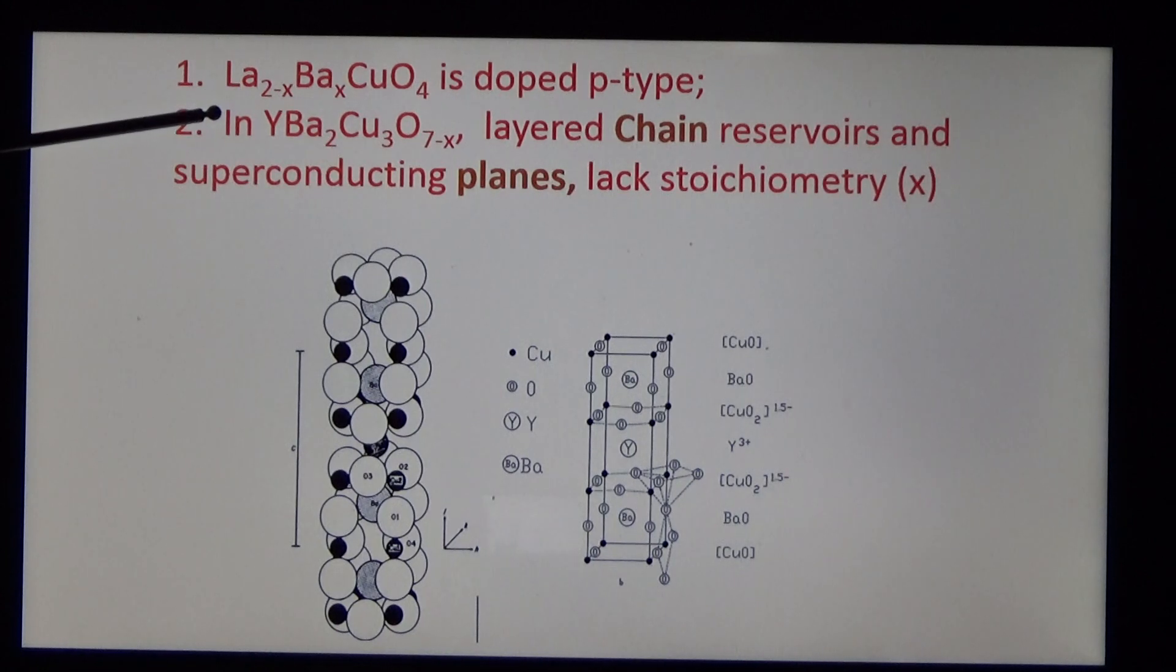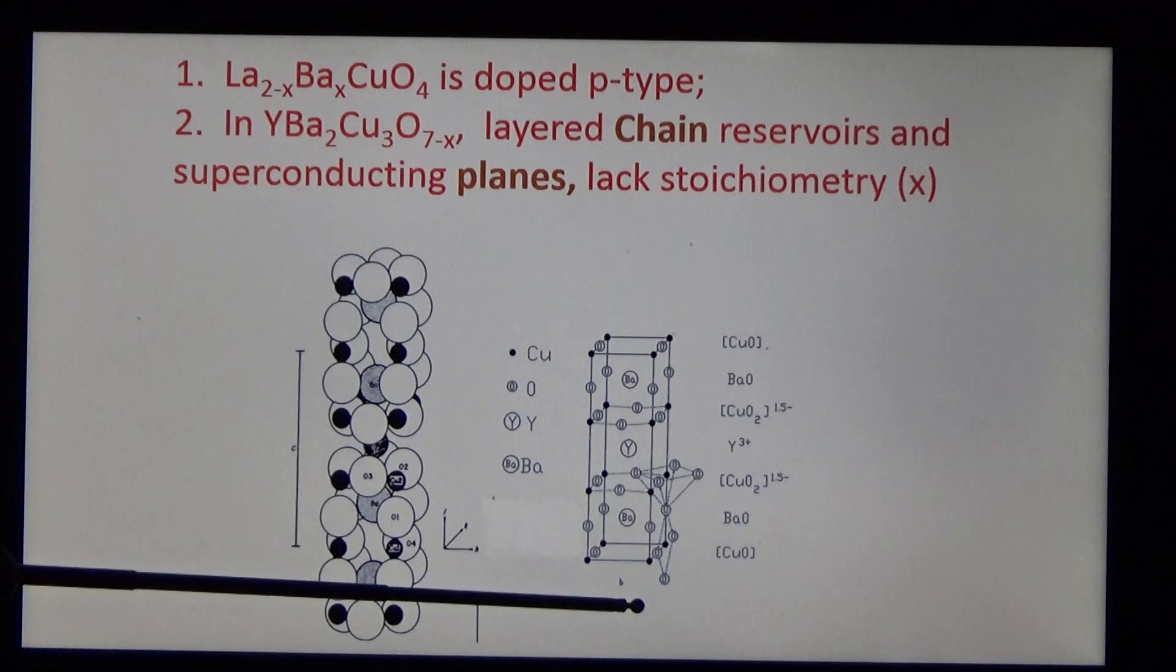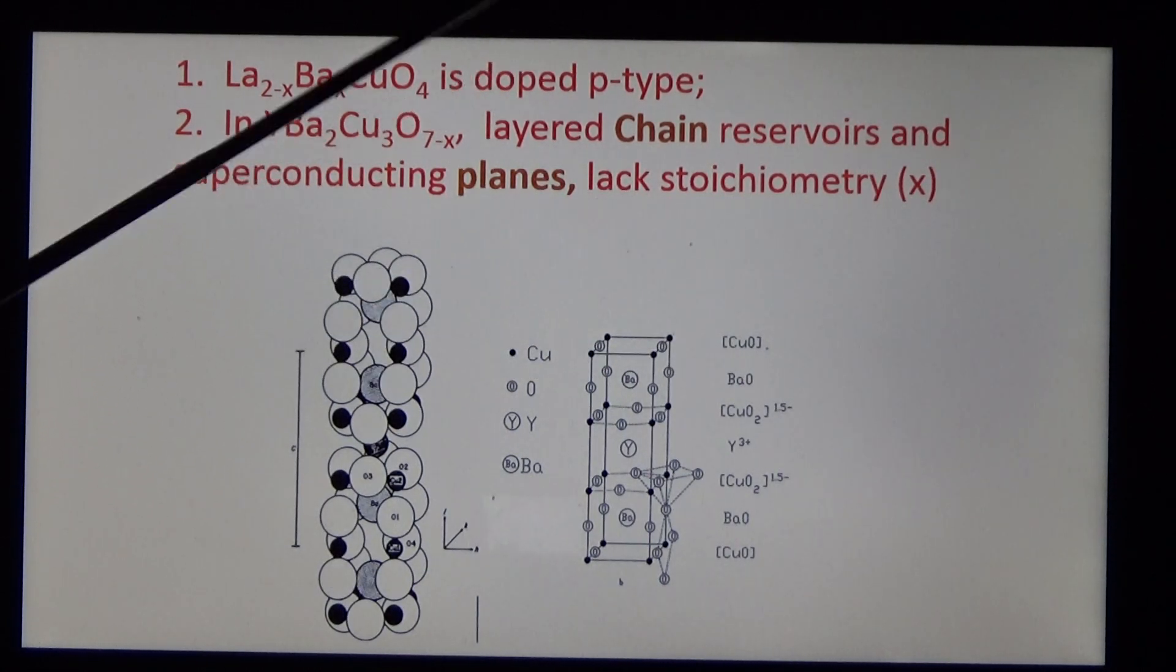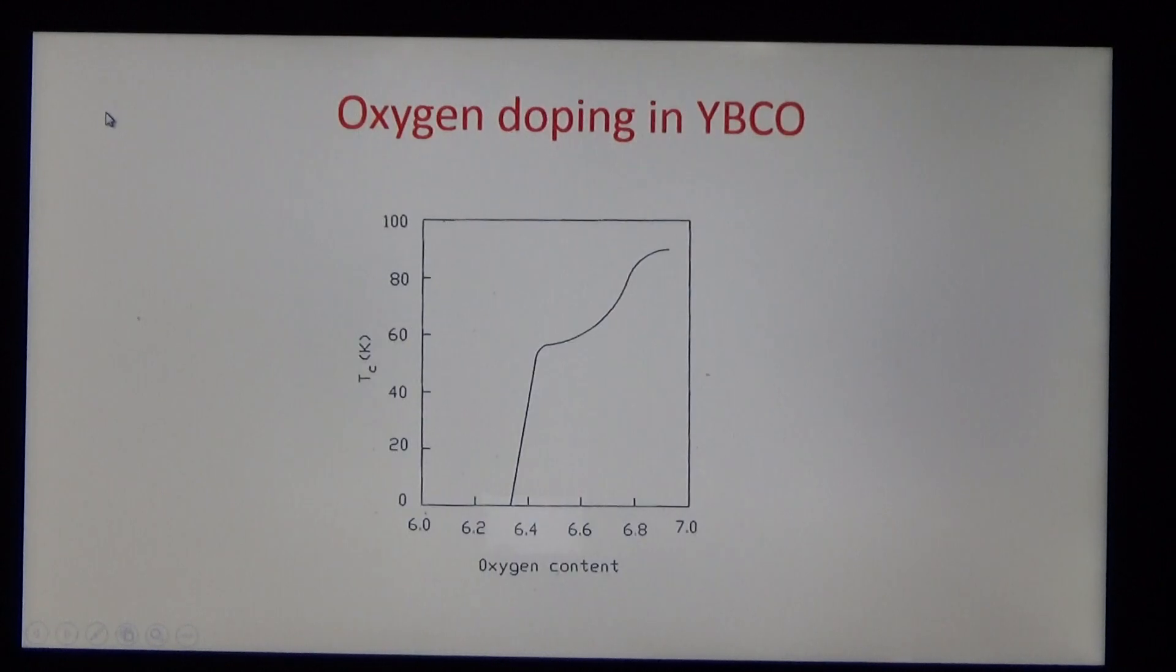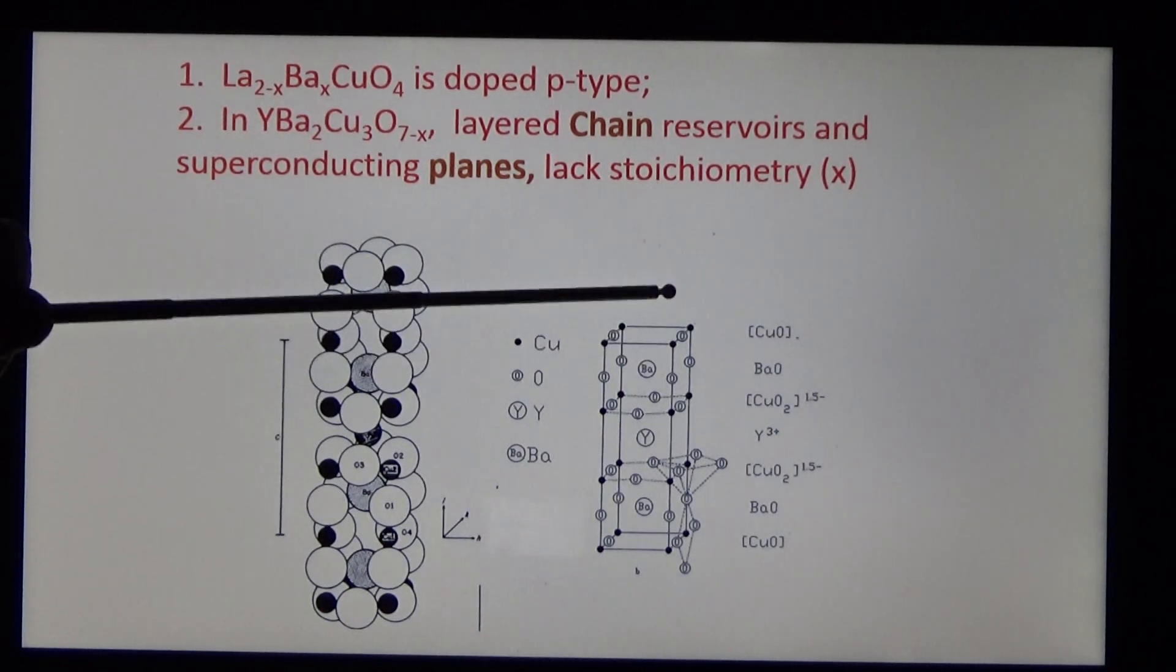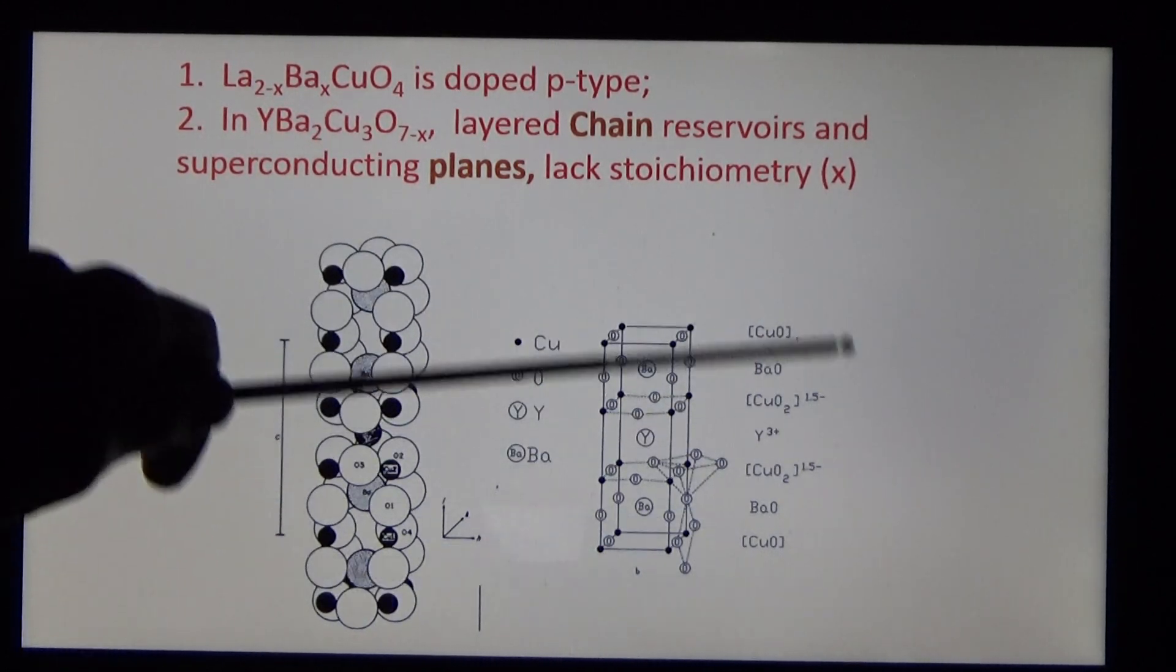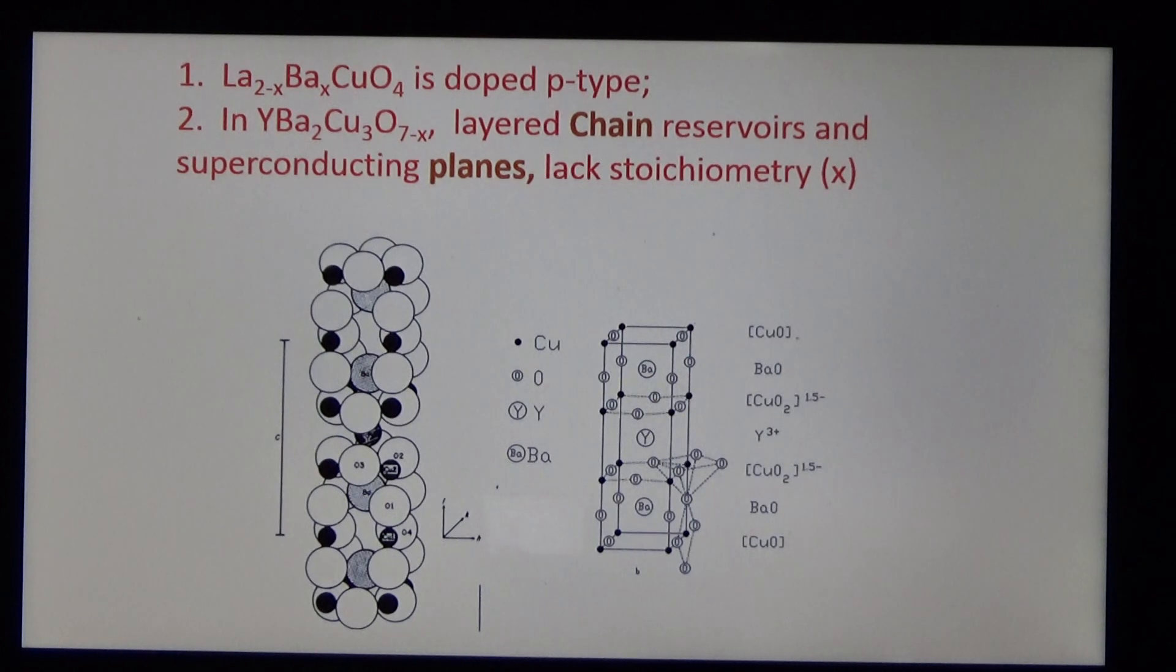In YBCO, there are 13 cationic charges and divalent anions. So there's a stoichiometric mismatch. When it's under-doped, it's non-superconducting. When it's over-doped, the critical temperature is 93 Kelvin. What happens during baking in oxygen is that these planes absorb oxygen ions, drawing electrons from the superconducting plane. And this is confirmed by Madelung potential calculations. The holes are therefore formed in superconducting plates.